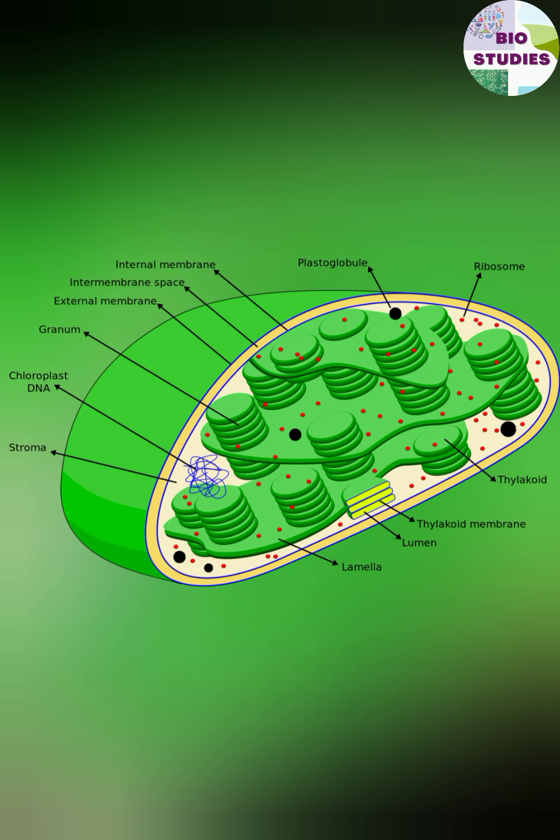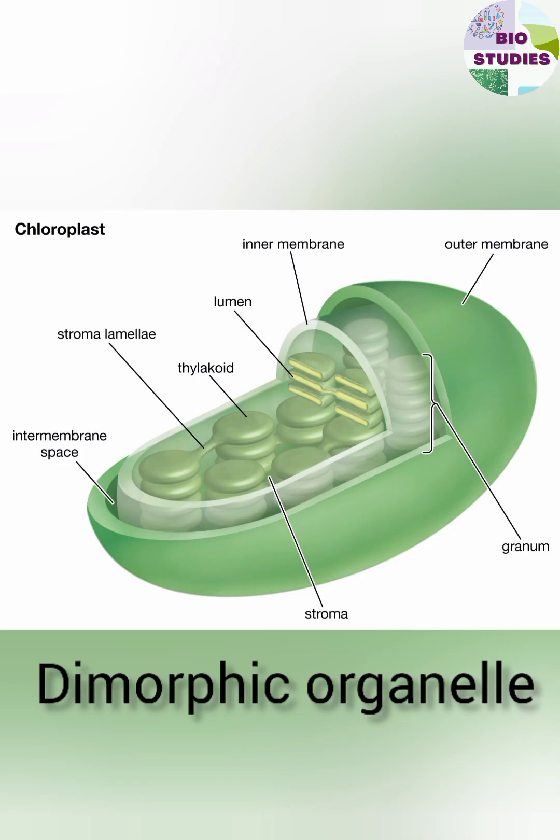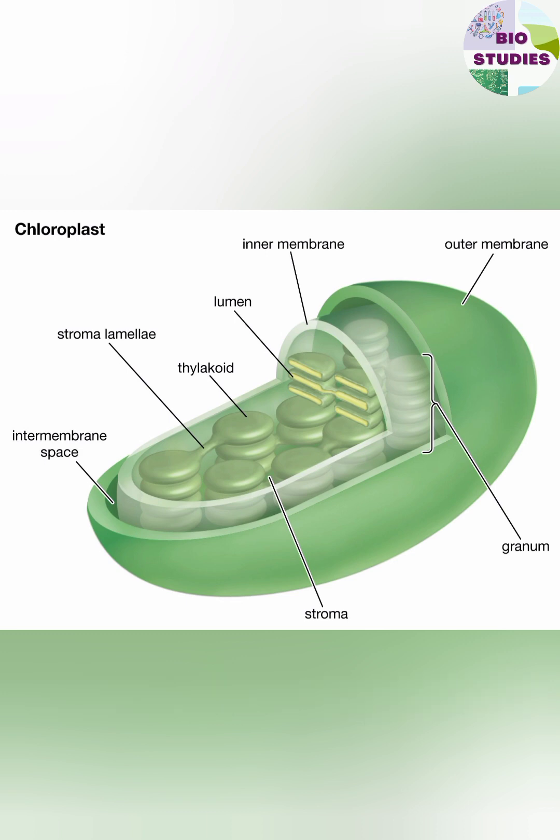One more thing — chloroplast is a dimorphic organelle. There are two forms: granule as well as agranule.